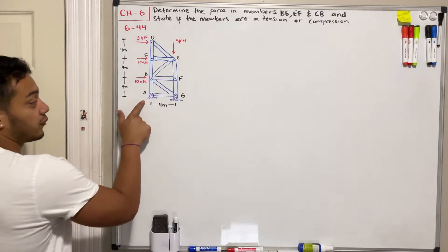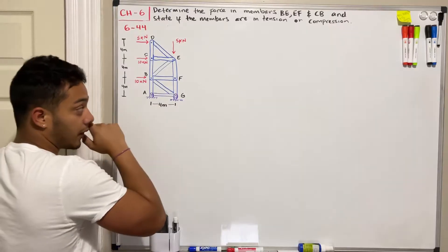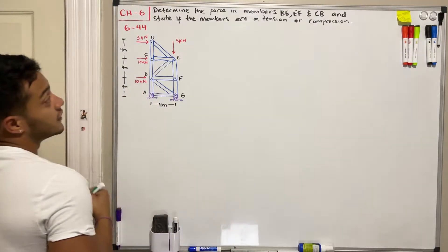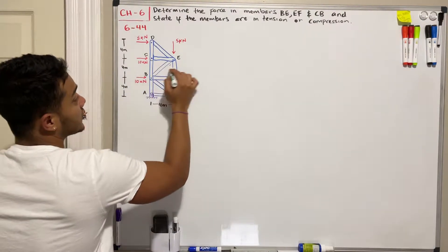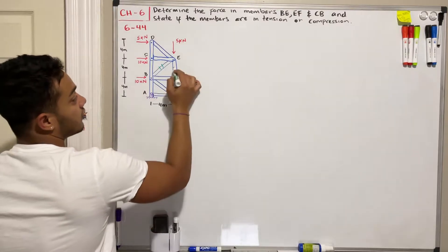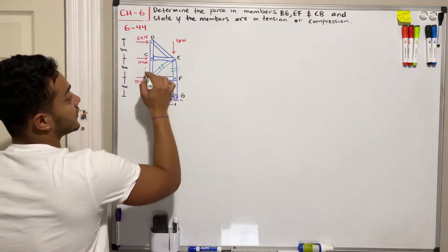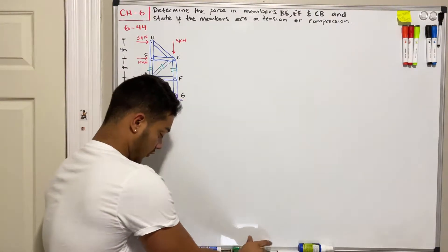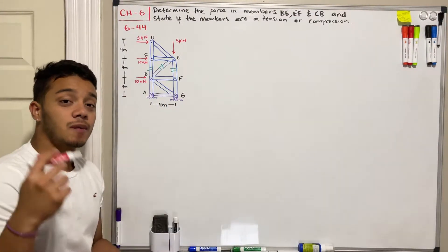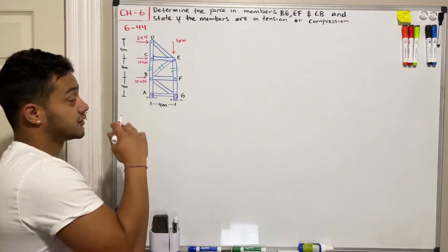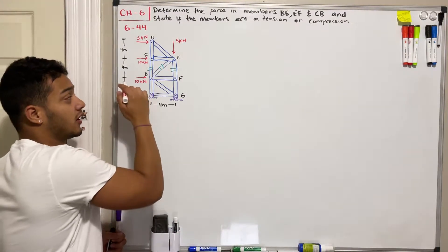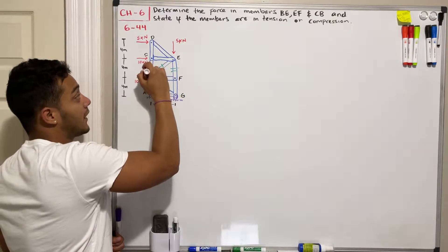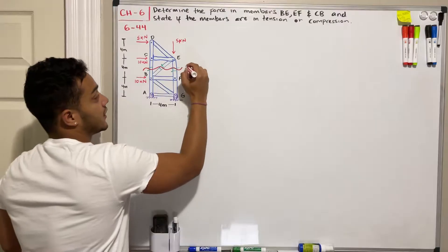The truss is pinned at point A and has a roller at G. We want to find the force in members BE, EF, and CV. For this problem I'm going to apply the method of sections, so we need to cut a section that cuts all these members. We're going to cut like this and name this section AA.